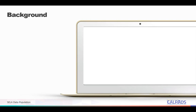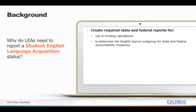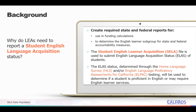Let's discuss some background on why the student English language acquisition status is being reported. First, it's reported to create required state and federal reports for funding calculations, as well as to determine the English learner subgroup for state and federal accountability measures. The student English language acquisition status is submitted through the CELA file, and the status is determined either through the Home Language Survey or the English Language Proficiency Assessment for California testing. The status will be used to determine if a student is proficient in English or may require English learner services.